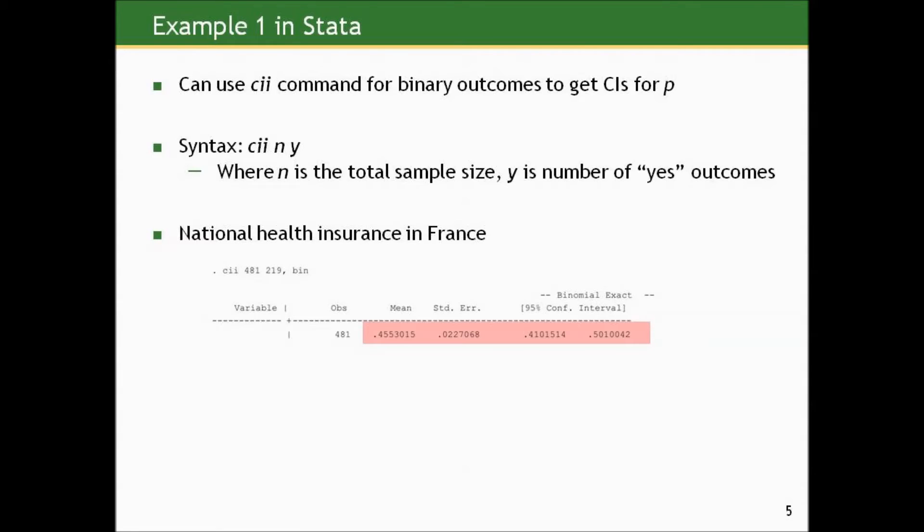And just like with continuous data, we can use Stata to do this for us. We can use the CII command for binary outcomes as well to get confidence intervals. And the syntax here, we don't have to provide as much stuff. We can just give our total sample size and then the number of yeses or a number of outcomes in our sample. So the syntax is CII and then N, the sample size, and Y. I just called it arbitrarily Y. Y is the number of yes outcomes.